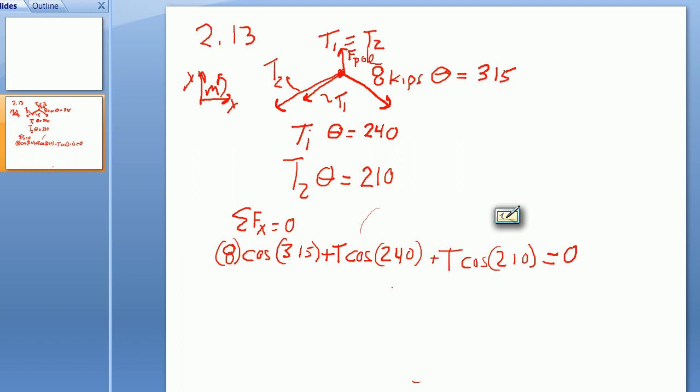And I'm going to go through a bit of the algebra just so you can see. You would have to basically take T on the outside would be equal to minus 8 times the cosine of 315 divided by cosine of 240 plus the cosine of 210. And that would be the algebra that would solve for the tension. It should be positive because you know it's got to be tension and you get a solution there.